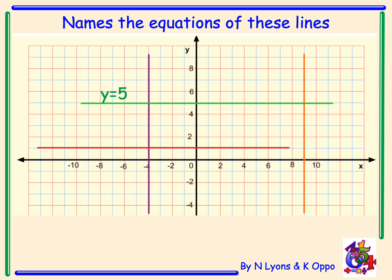The green line is a horizontal line with equation y equals 5, because it cuts the y axis at y equals 5. The red line is another horizontal line cutting the y axis at y equals 1, so its equation is y equals 1. The purple line is a vertical line cutting the x axis at x equals negative 4, so it has equation x equals minus 4. The orange line cuts the x axis at x equals 9, so its equation is x equals 9.